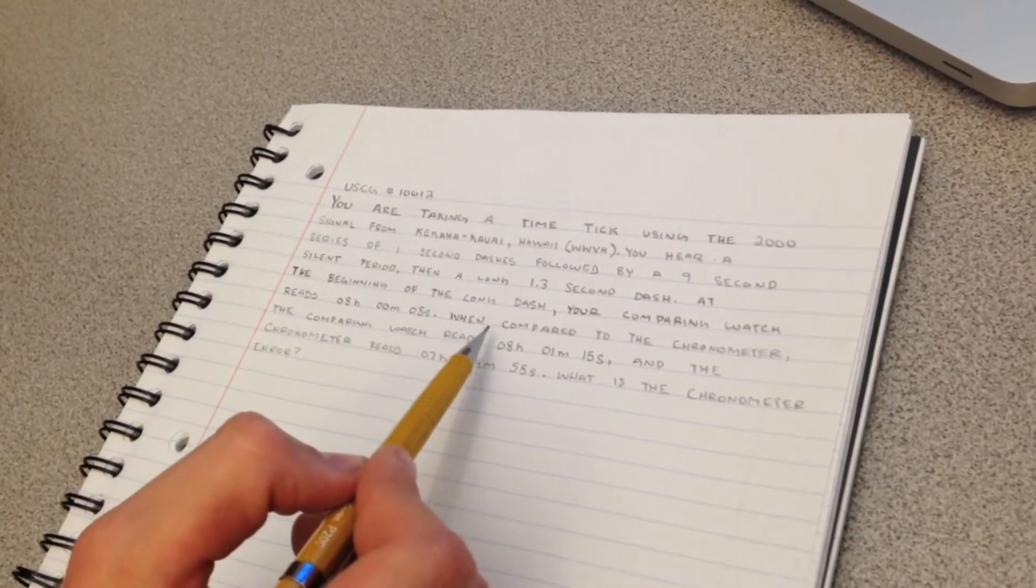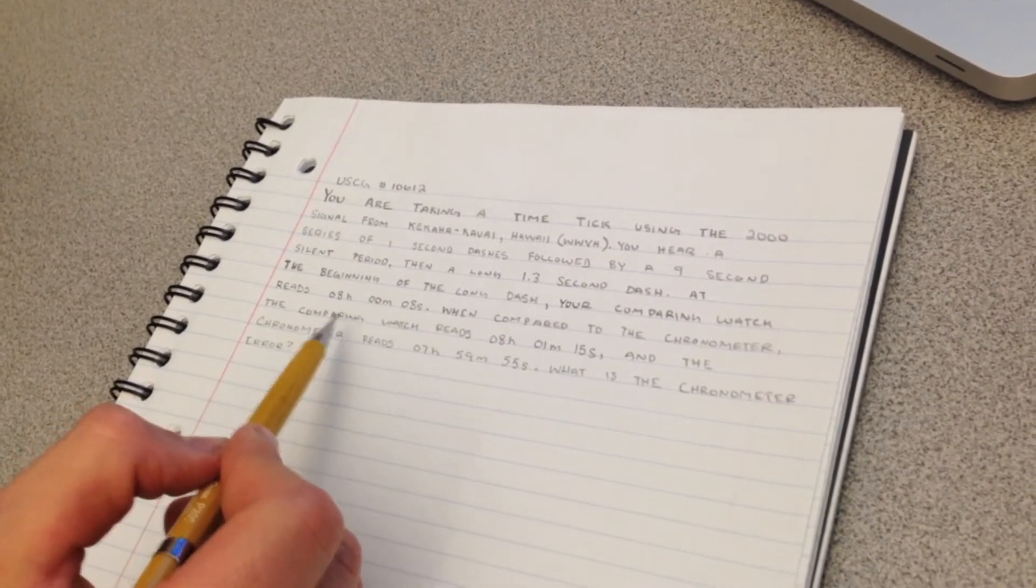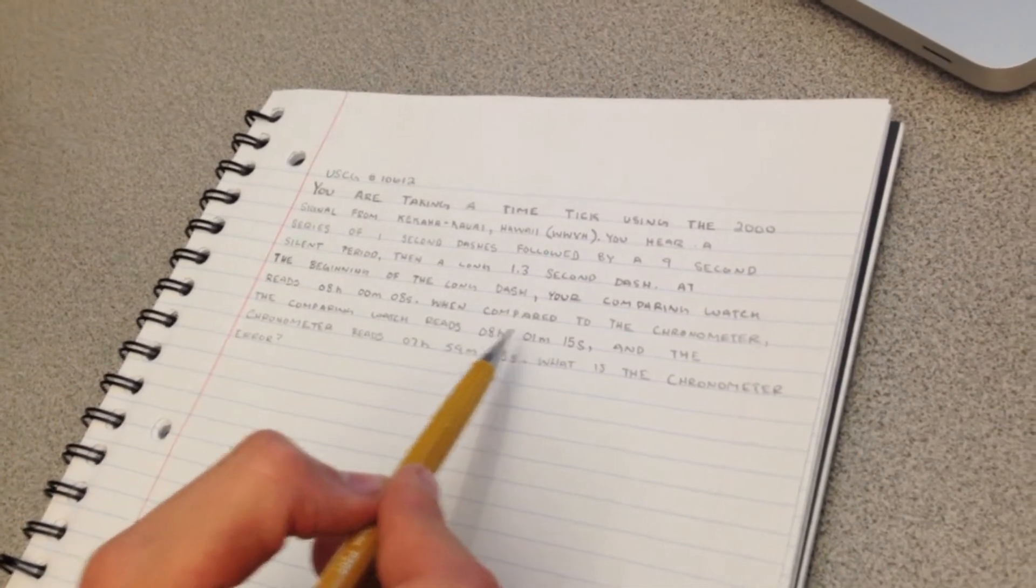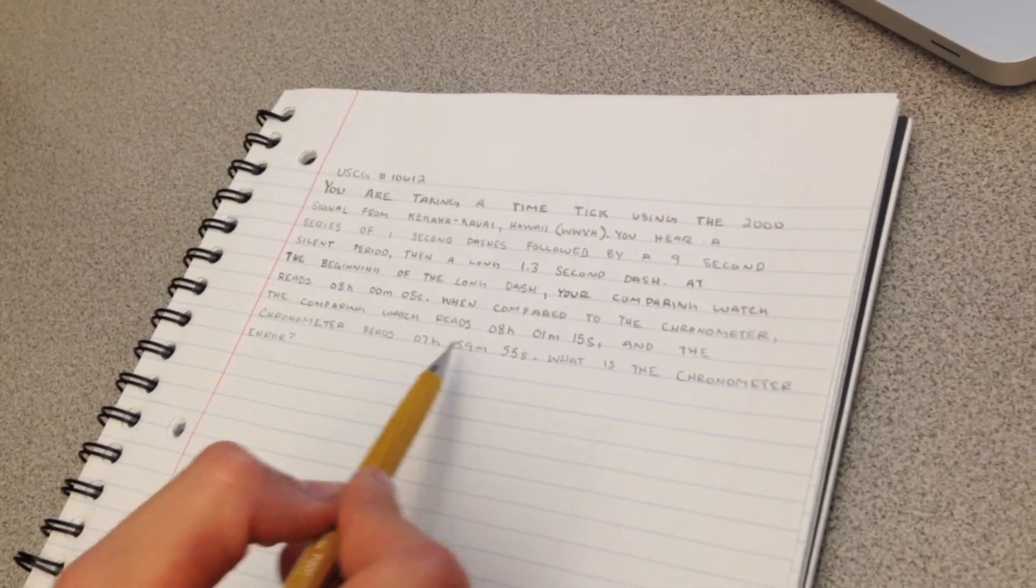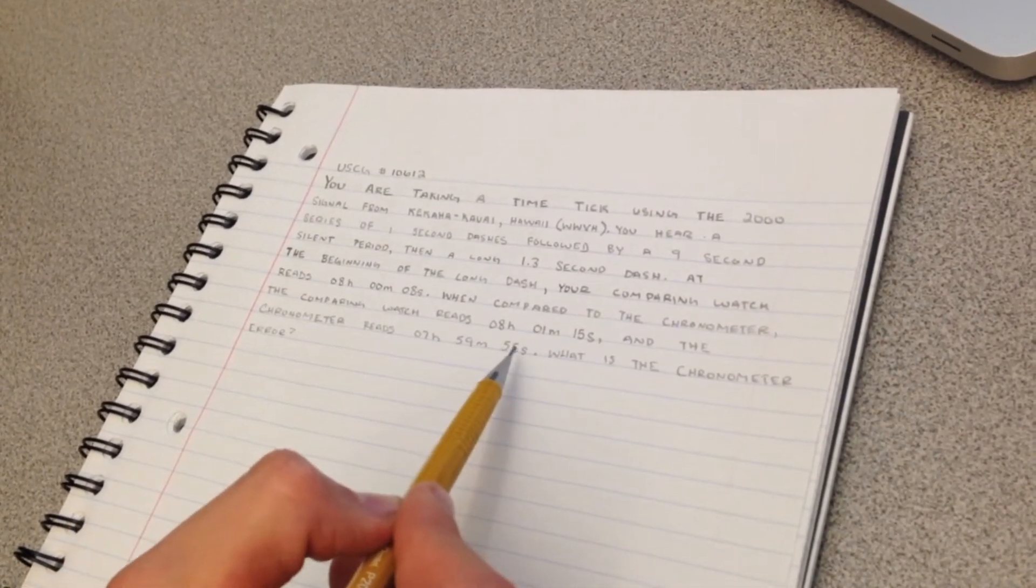When you compare to the chronometer, the chronometer watch reads 08 hours, 01 minutes, 15 seconds. And the chronometer reads 07 hours, 59 minutes, 55 seconds.